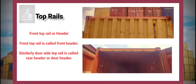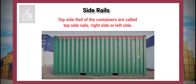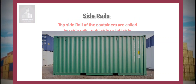Top rails: The front top rail is called the front header. Similarly, the door side top rail is called the rear header or door header. The top side rails of the container are called top side rails — right side or left side.